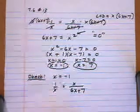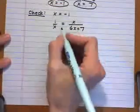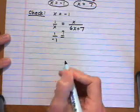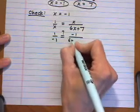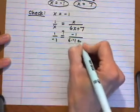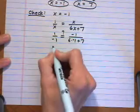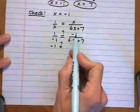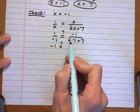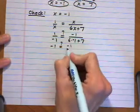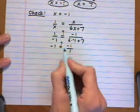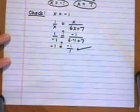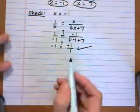Putting in x equals negative 1, we get 1 over negative 1. Does that equal negative 1 over 6 times negative 1 plus 7? The left side is negative 1. The right side is negative 1 over negative 6 plus 7, which is negative 1 over 1, which equals negative 1. So x equals negative 1 is confirmed as a solution.